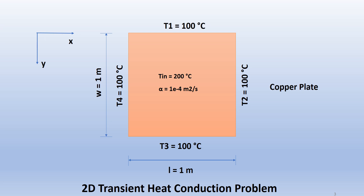We will vary the grid spacings and time steps, resolve the problem, and obtain temperatures inside the domain. Our domain is a copper plate 1 meter long and 1 meter wide. The thermal diffusivity of the material is alpha equals 1e-4 meter squared per second. The plate is initially at 200 degrees Celsius. At time t equals 0 onwards, all four sides of the copper plate are maintained at 100 degrees Celsius, so the temperature of the plate will start dropping. Our objective is to find the temperature profile inside the domain at various times.